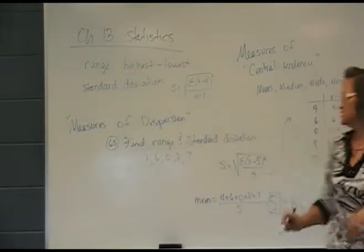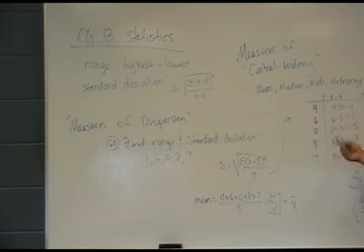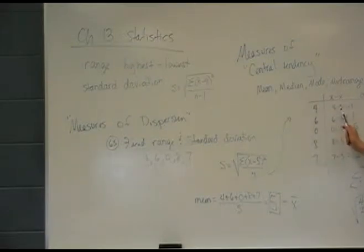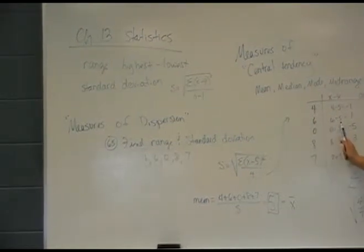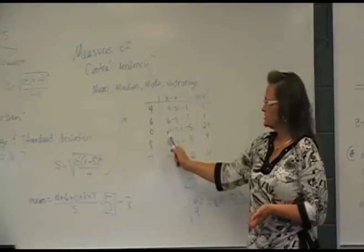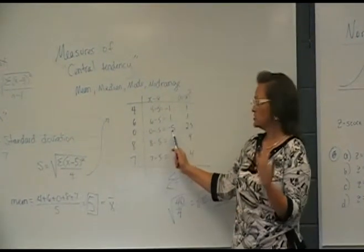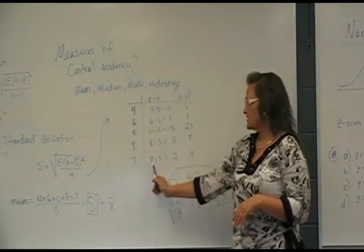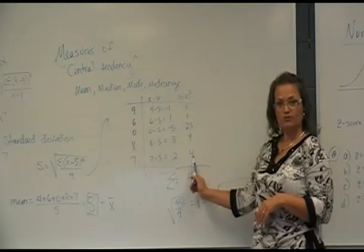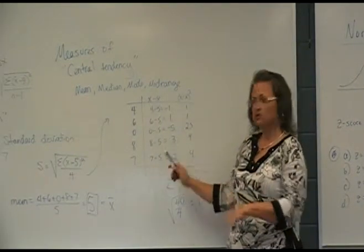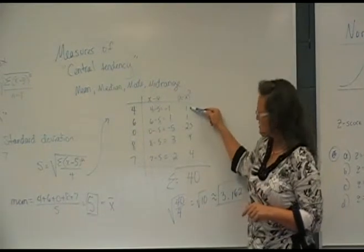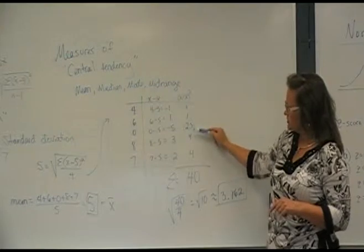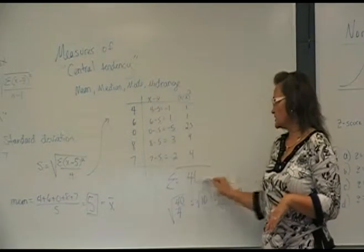Here's a chart of those steps. For the values 4, 6, 0, 8, 7 — the order doesn't matter. Starting with 4: 4 minus the mean of 5 is negative 1, and negative 1 squared is 1. For 6: 6 minus 5 is 1, and 1 squared is 1. For 0: 0 minus 5 is negative 5, and squared is 25. For 8: 8 minus 5 is 3, and 3 squared is 9. For 7: 7 minus 5 is 2, and 2 squared is 4. All these come out positive when squared. Then the sigma means summation — we sum all those answers together: 1 plus 1 plus 25 plus 9 plus 4, giving us 40.